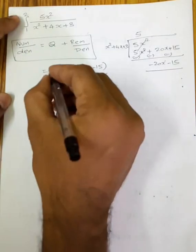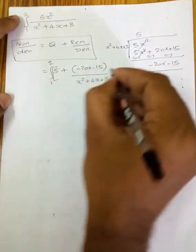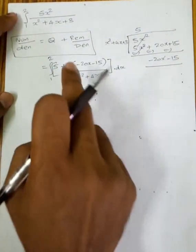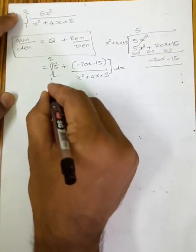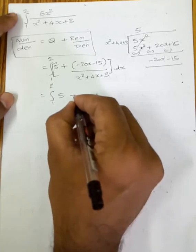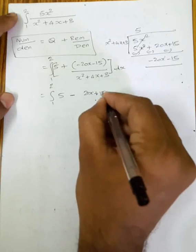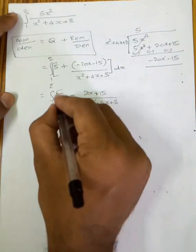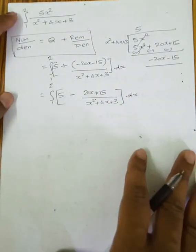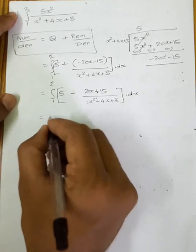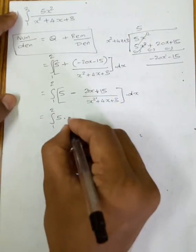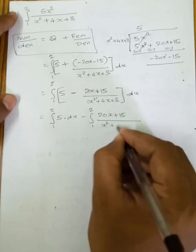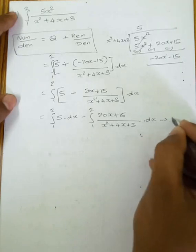So our result is: 5x²/(x²+4x+3) = 5 + (−20x−15)/(x²+4x+3). Integrating from 1 to 2, the whole expression dx becomes: integration of 1 to 2 of 5 dx minus integration of 1 to 2 of (20x+15)/(x²+4x+3) dx. This is our first equation.